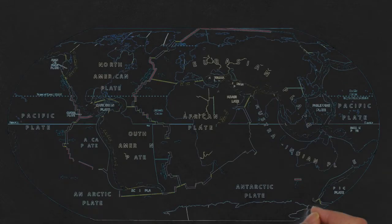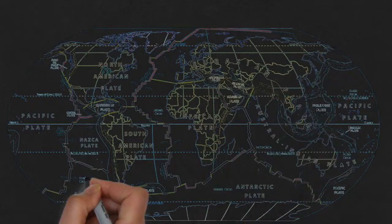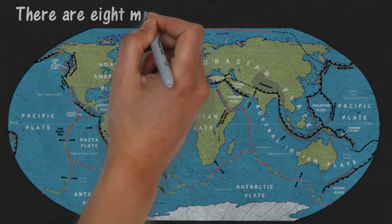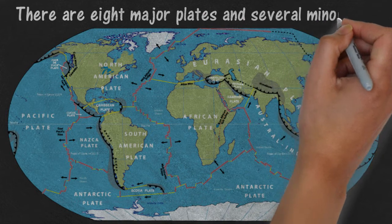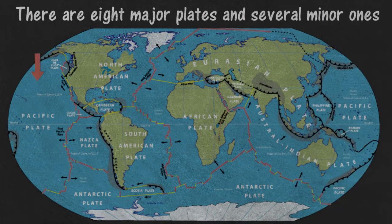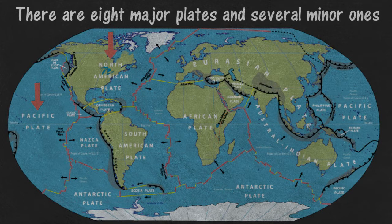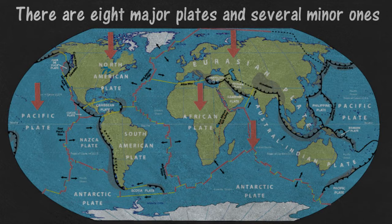Let's take a look at some of the identified plates. There are eight major plates and several minor ones. The major plates are the Pacific Plate, North American Plate, Eurasian Plate, African Plate, Antarctic Plate, Australian Plate, Indian Plate, and the South American Plate.